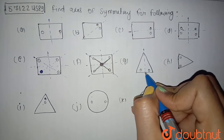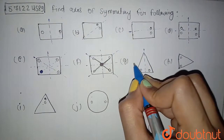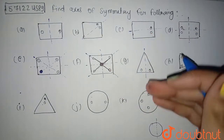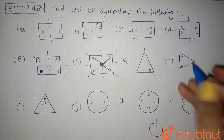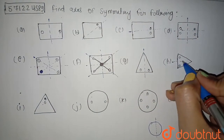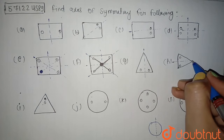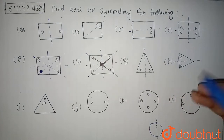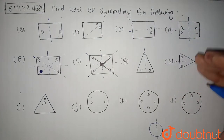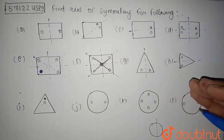Here you just can have this one. You cannot divide it like this because this part and this part will not be equal. From here you can clearly see that you can divide it into two parts and this is the same mirror image.